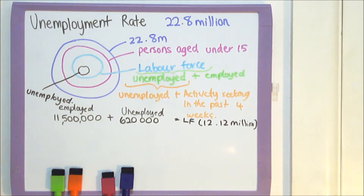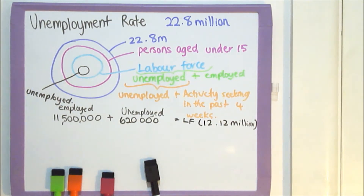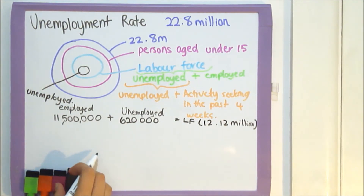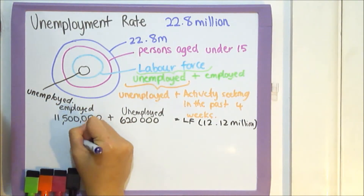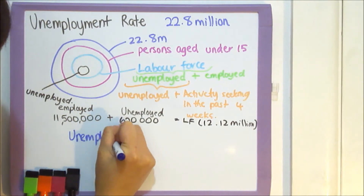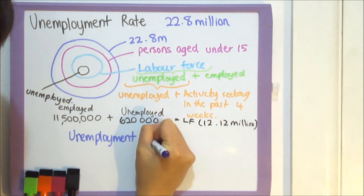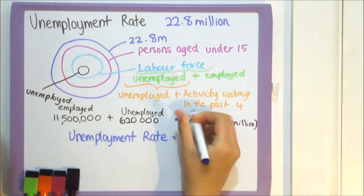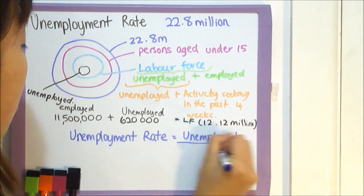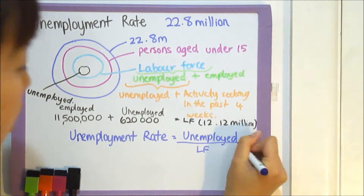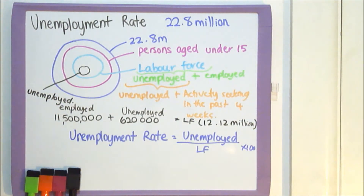In order to calculate the actual unemployment rate, we need the number of unemployed over the labour force. I've already shown you what the labour force is, so it's pretty simple — we just put the calculations in. The unemployment rate is calculated by the number of unemployed persons over the labour force, times 100 to find the percentage.